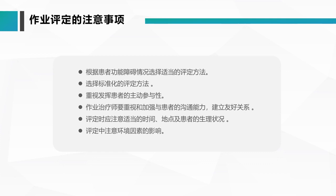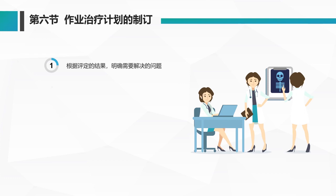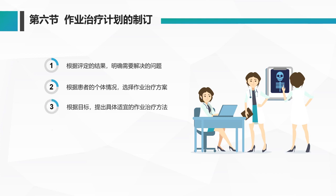注意适当的时间、地点和患者的生理状况，并注意环境对作业的影响。第六节，作业治疗计划的制定。作业治疗计划的制定要根据评定结果明确需要解决的问题，然后根据患者的个体情况选择最佳的作业治疗方案，根据目标提出适宜的作业治疗方法。计划在实施过程中要定期进行评定，并及时修正计划。